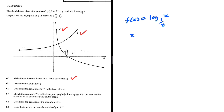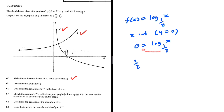We know that for the x-intercept, we just need to let y be equal to 0. We get 0 equals log base one half of x. If we apply one of the log laws, then one half to the power 0 should equal x. The base carries the 0, and any number to the power 0 is 1.